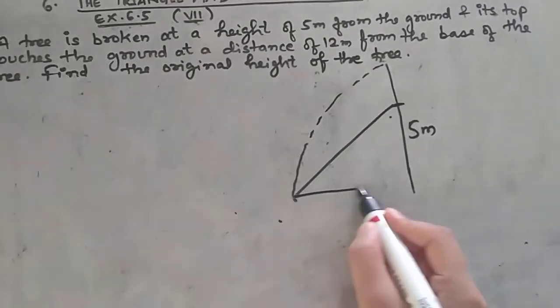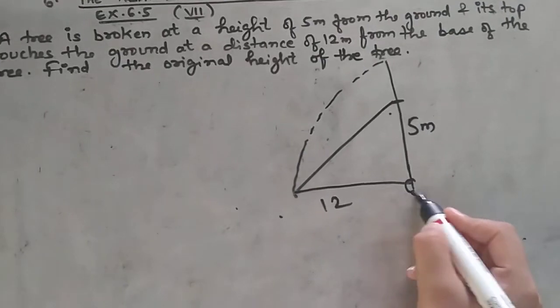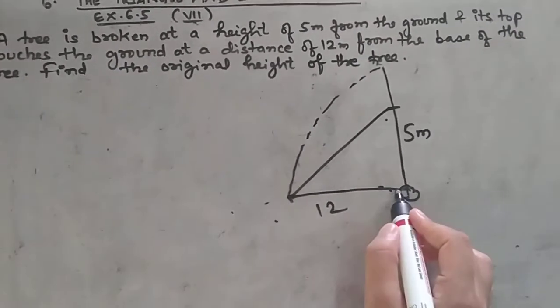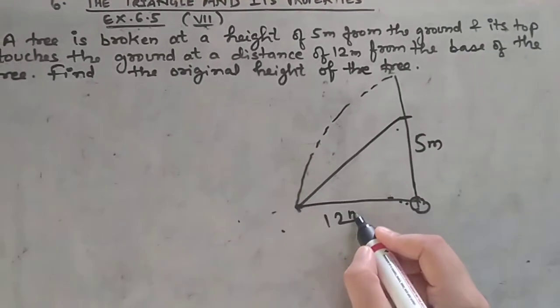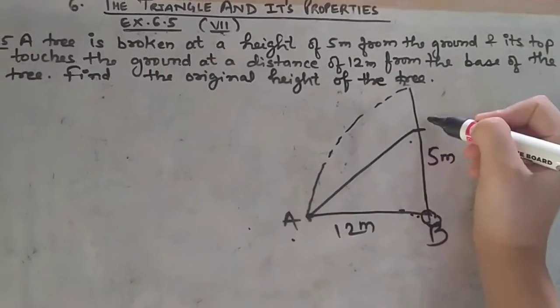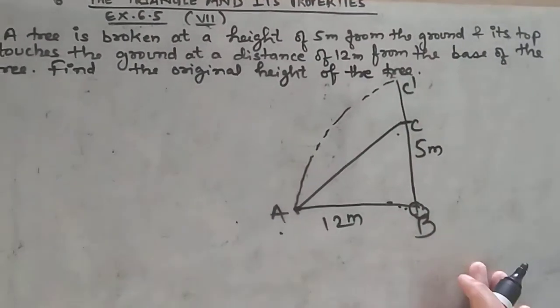The base of the tree is here, and the distance between them is 12 meters. So we've labeled this as AB. This point we called C, and this we called C dash.